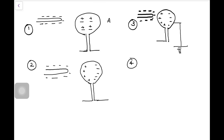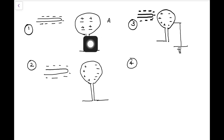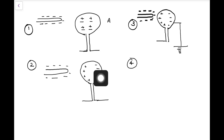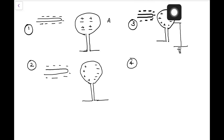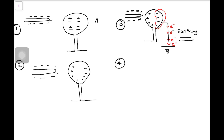Similarly, if we want to make body A positively charged, I will take a negatively charged rod and place it at some distance from the neutral body A. All the positive charges appear on the near surface and negative charges, due to repulsion, accumulate on the far surface. In the next step, I hold this rod at some distance and do earthing of this surface. Due to earthing, all these electrons will start moving and go into the earth.